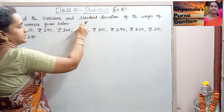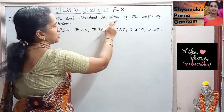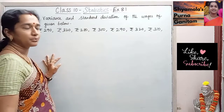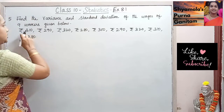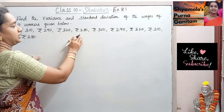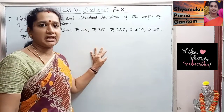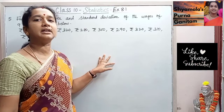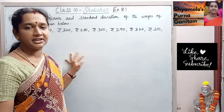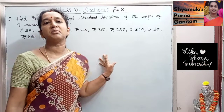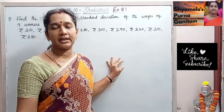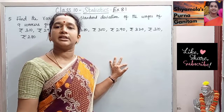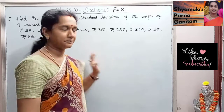Find the variance and standard deviation of the wages of 9 workers given below. For the wages of the 9 workers, we are asked to find the variance and the standard deviation. The variance is σd²/n, and the standard deviation is √(σd²/n).